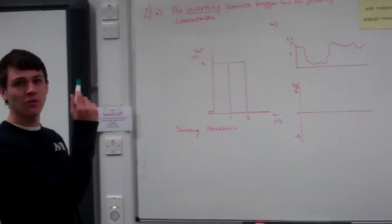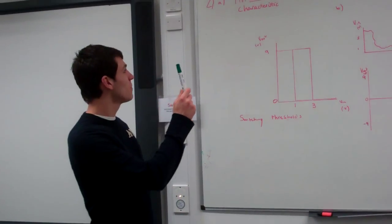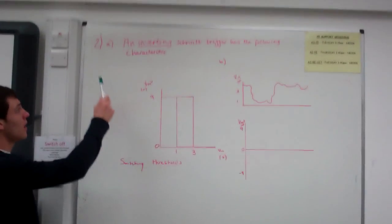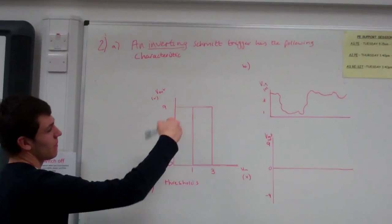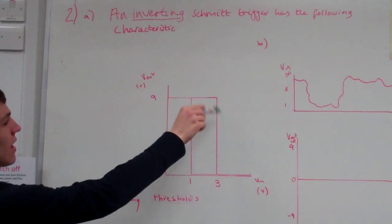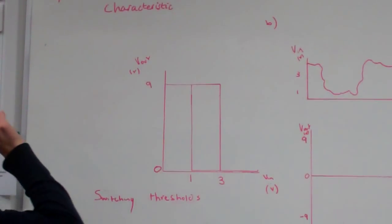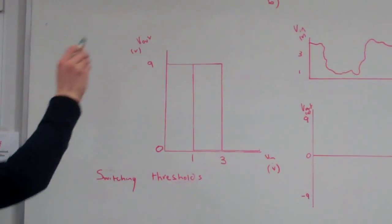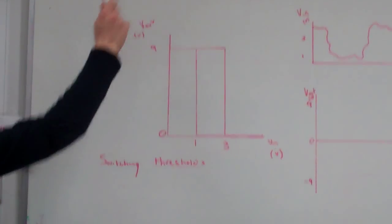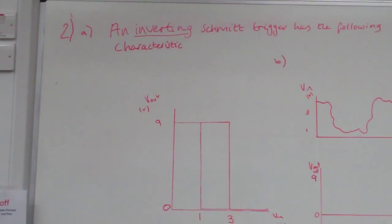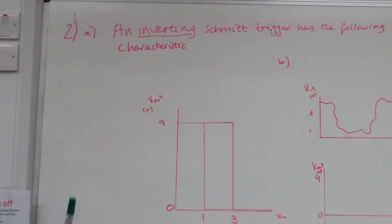Alright, so now we're on to question two, part A. It gives you the diagram of an inverting Schmitt trigger. Make sure to note that it's an inverting Schmitt trigger — that will become apparent later.